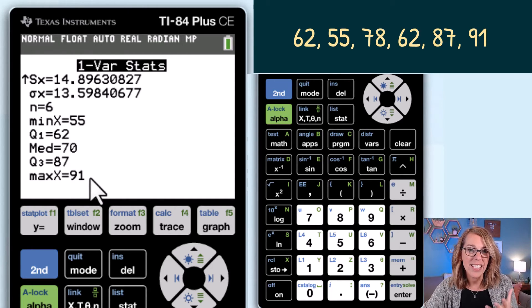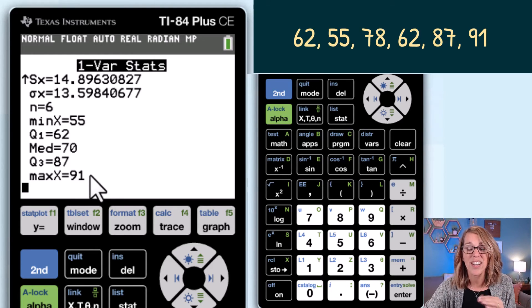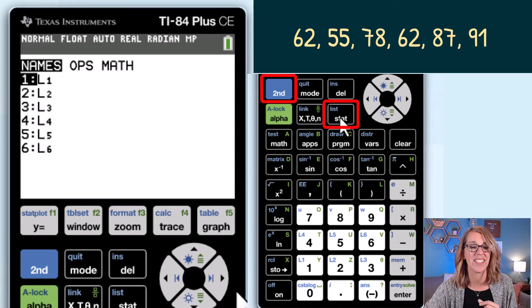The calculator doesn't give you the mode but if you want the mode all you've got to do is to sort your data in order and then take a look at the most frequent value. Let's do that really quick. I'm going to click on the list menu which is right above stat so I click second followed by list.